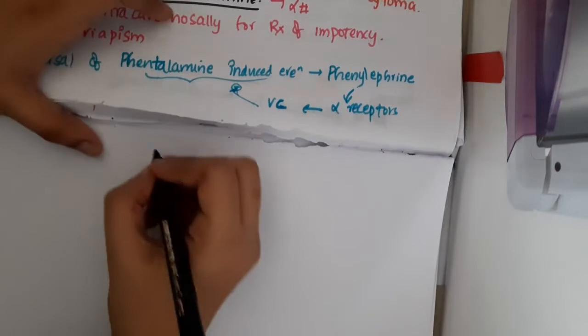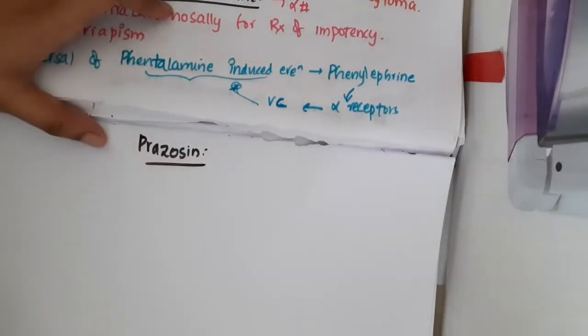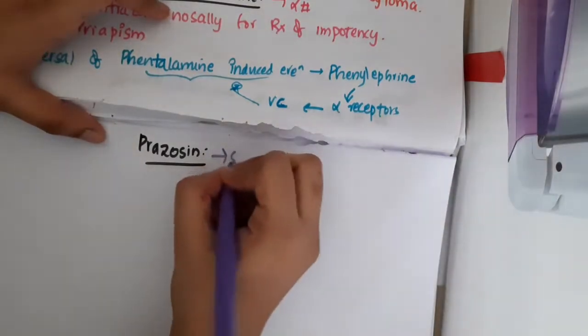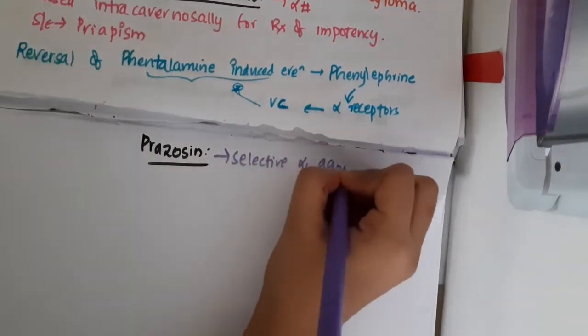Hello friends, let us now learn some important points about prazosin. What is prazosin? It is selective alpha 1 agonist.